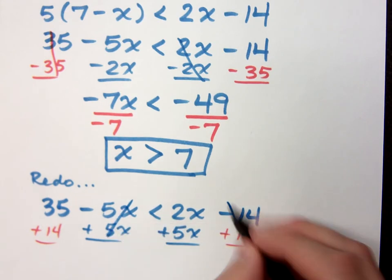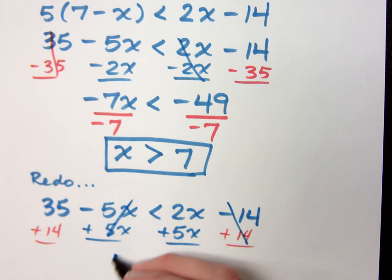Now those guys cancel. Those cancel. 49 is less than 7x.